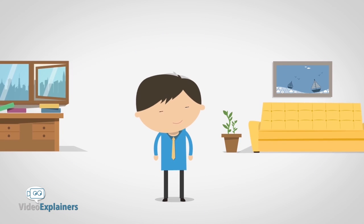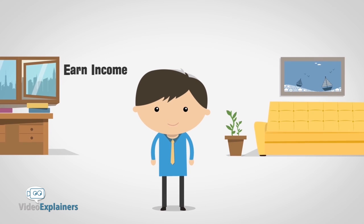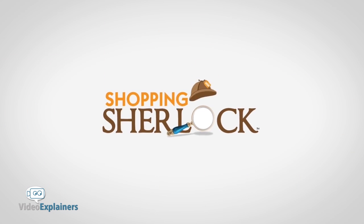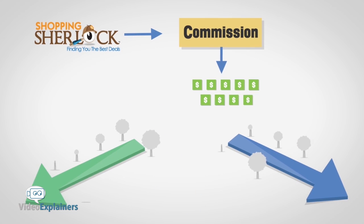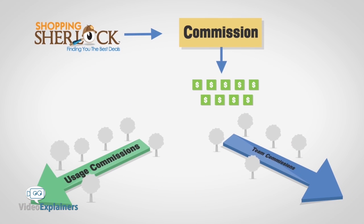This video helps you understand how you can earn income as a Shopping Sherlock affiliate when you start to share the business with others. Shopping Sherlock pays out commissions in nine different ways through two different avenues: usage commissions and team commissions.